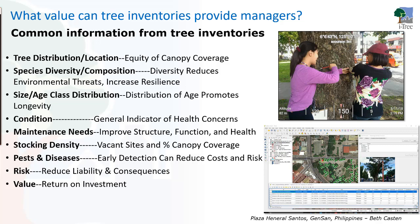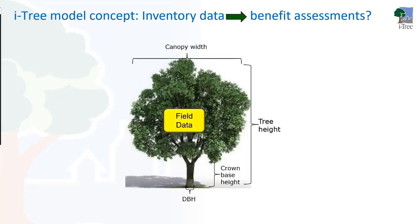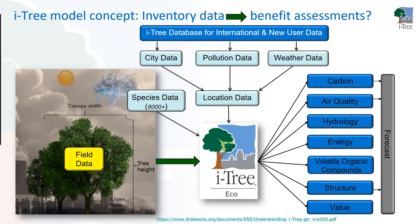There's a saying: you can't manage what you don't understand, and it starts with collecting data about the resource. Having just a few variables — size, species, and condition — can give you powerful information about structure. Tree inventories use some of the same information iTree uses: tree species, diameter, and condition. The iTree model uses field measurements and species information to estimate things like biomass and leaf surface area based on species equations. If specific species equations aren't available, it uses averages of other equations.